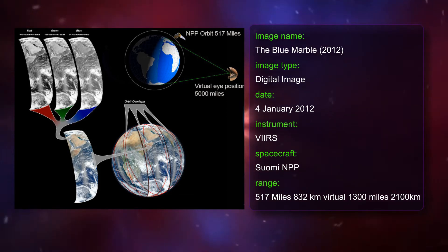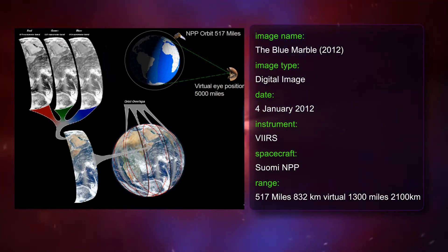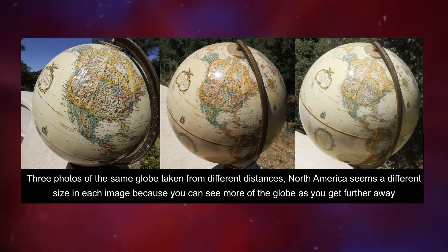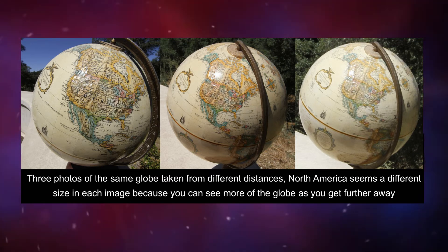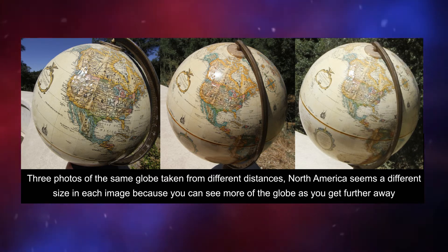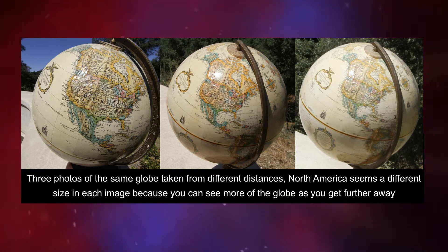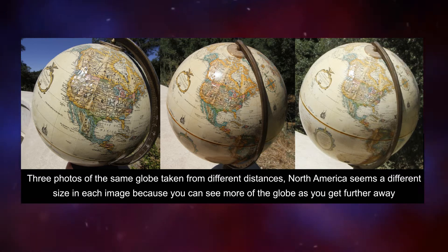Interestingly, views of the globe similar to this are entirely possible. Take a look at these three photographs of the same globe taken from different distances. As you can see, as we move away we see more of the globe and consequently North America looks smaller, even though the globe is the same size in each image.